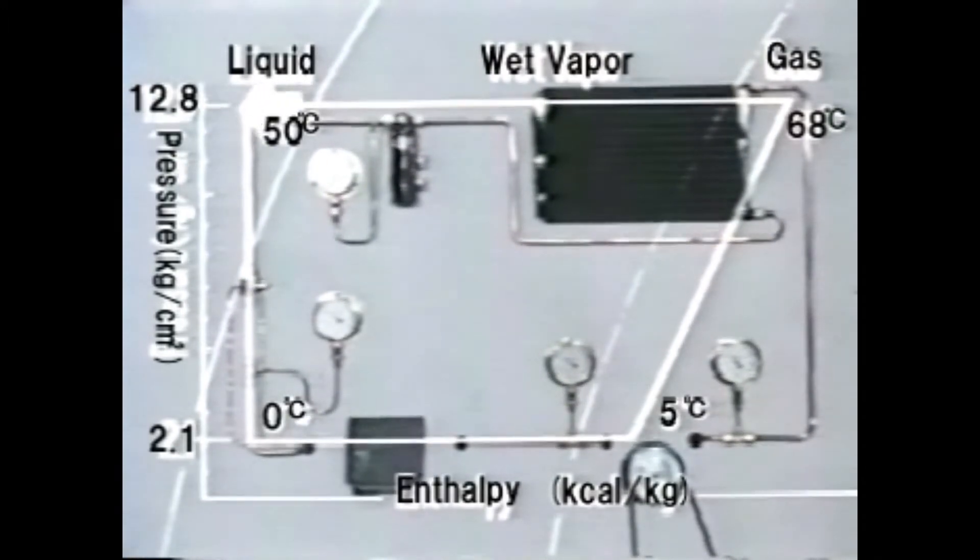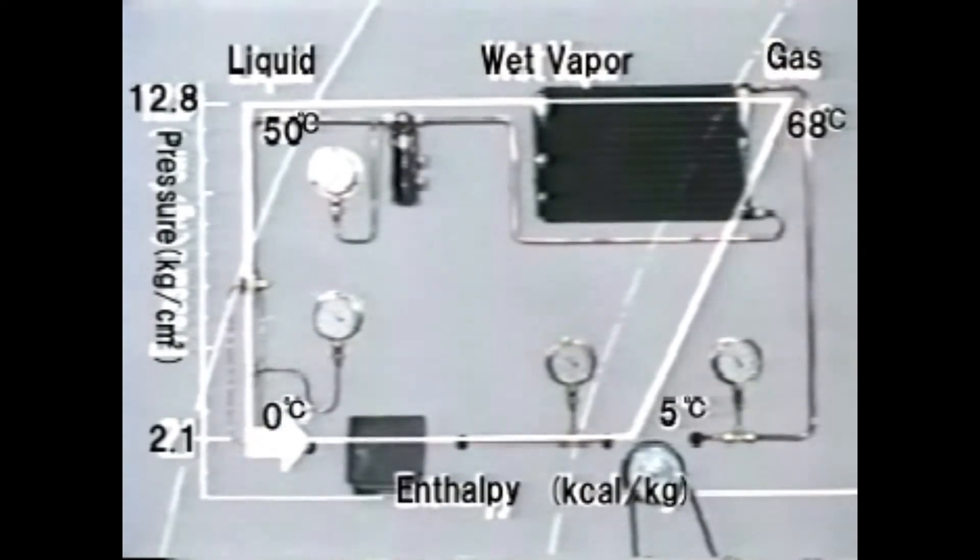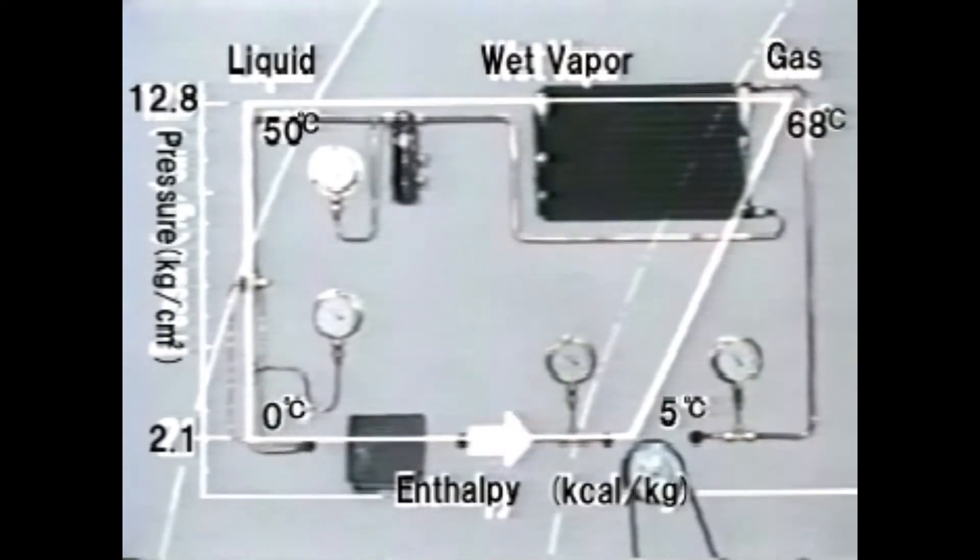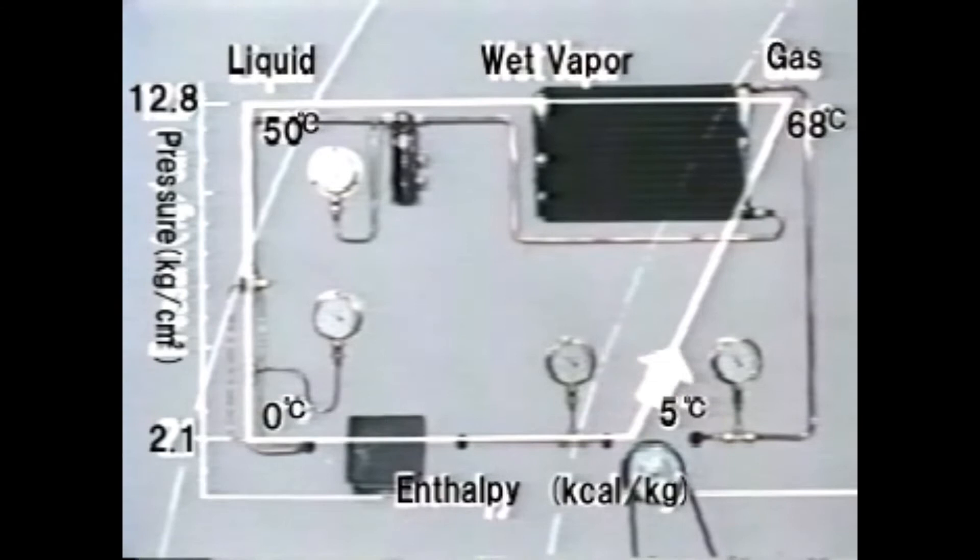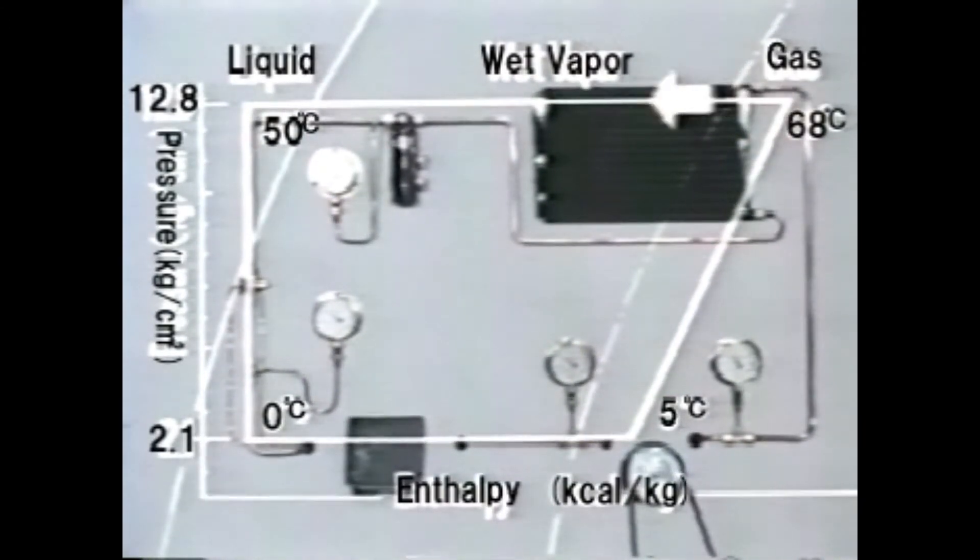Refrigerant circulates in that way through the refrigerating system, repeating gasification and liquefaction alternately, changing pressure and temperature.